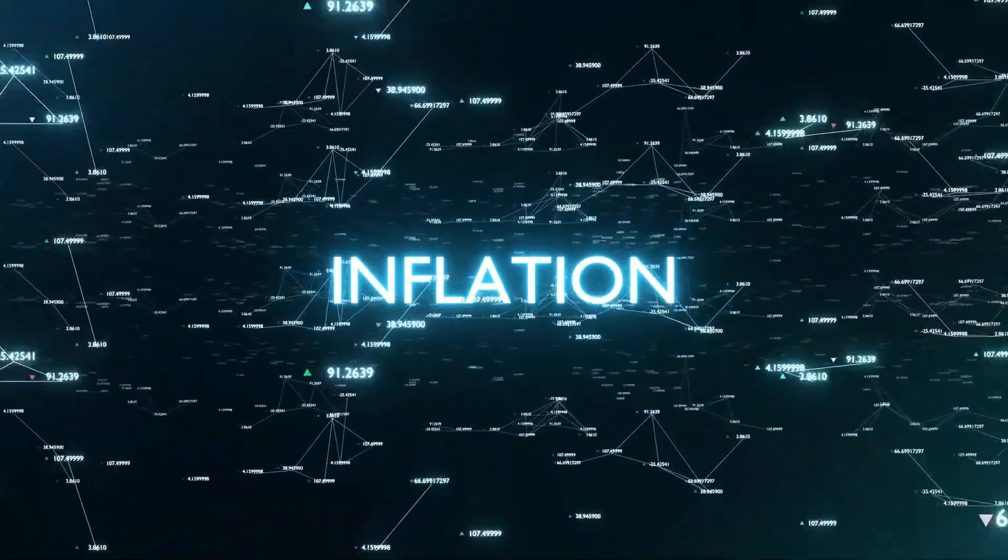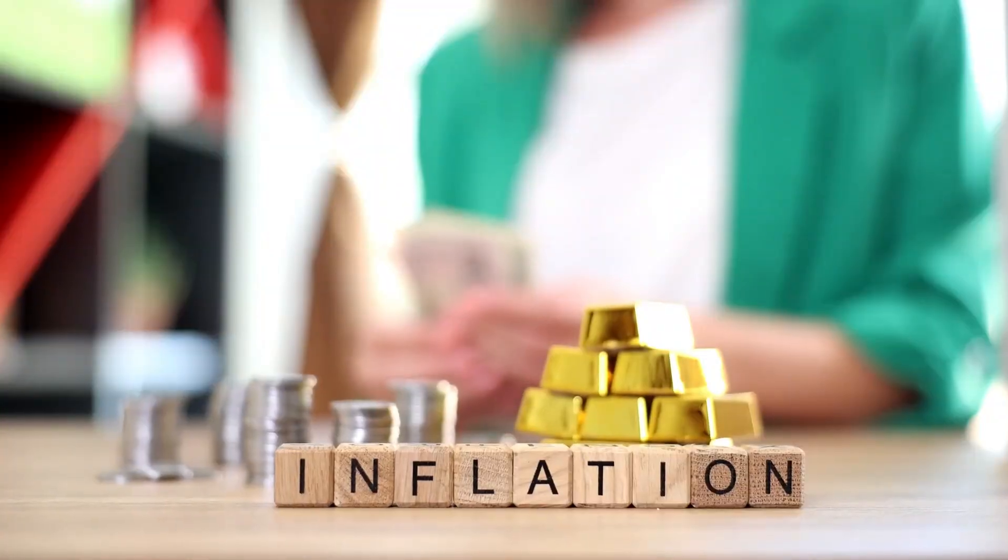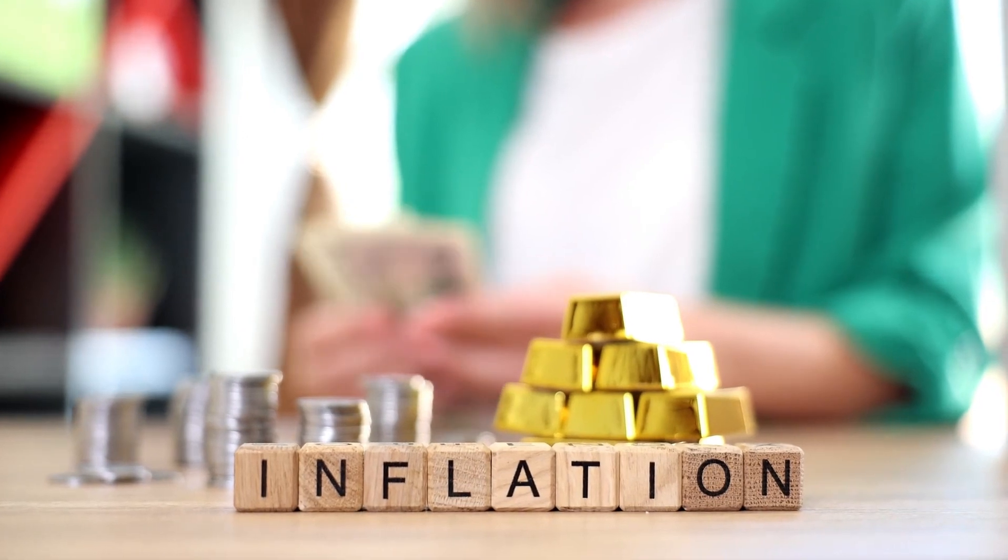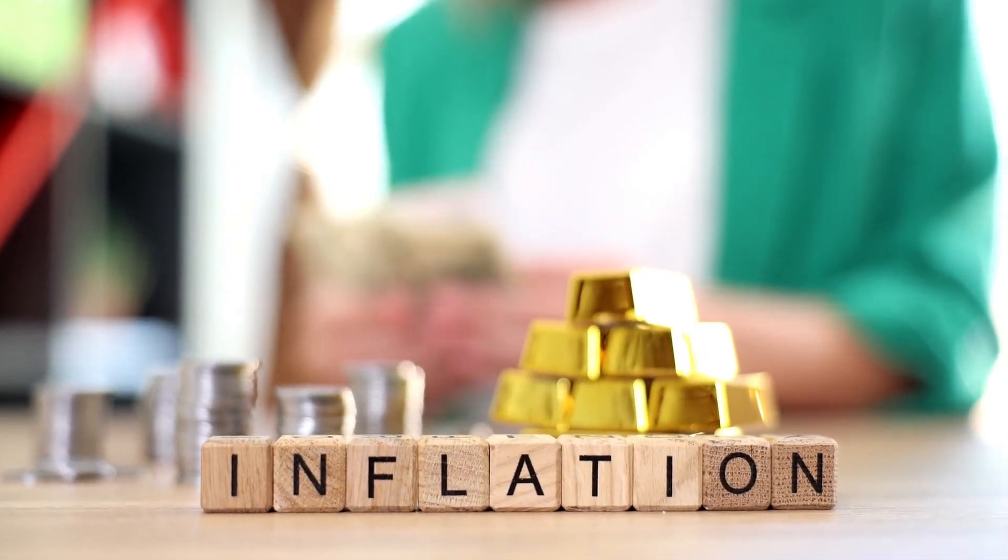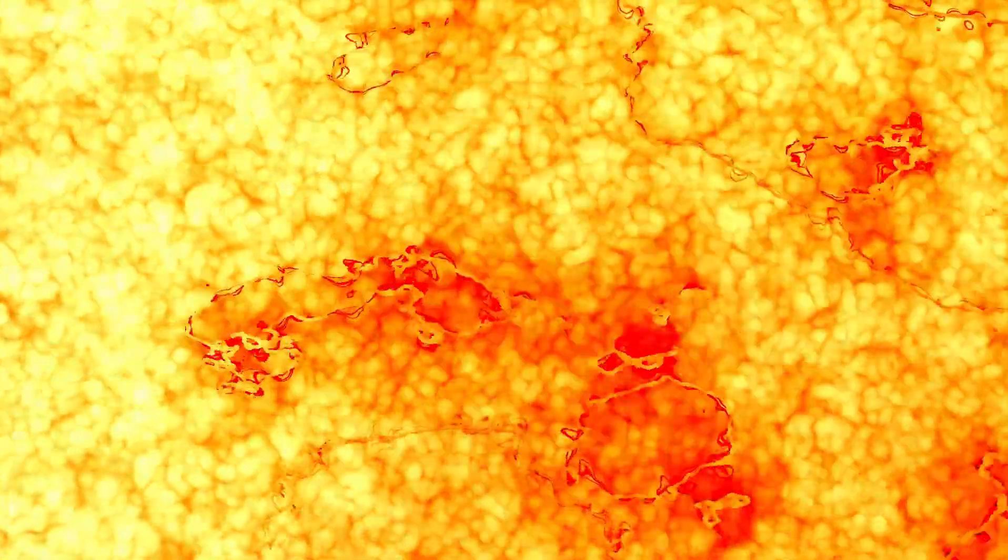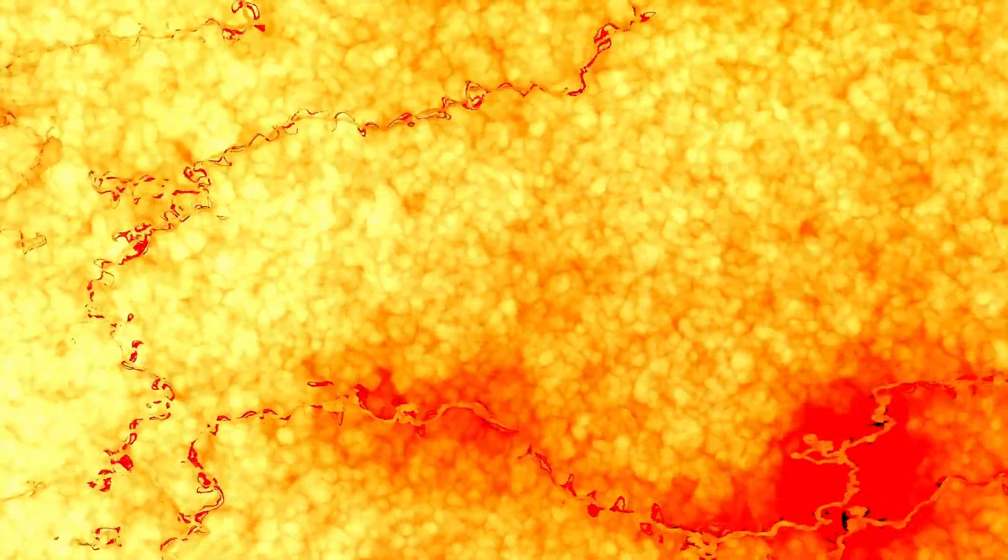At times, quantum fluctuations akin to those shaping the universe's structure cause certain areas where inflation ceases, resulting in a hot Big Bang. However, these regions are far fewer compared to those where inflation persists indefinitely. Notably, no two separate regions with Big Bangs will ever overlap because the expanding universe drives them apart.